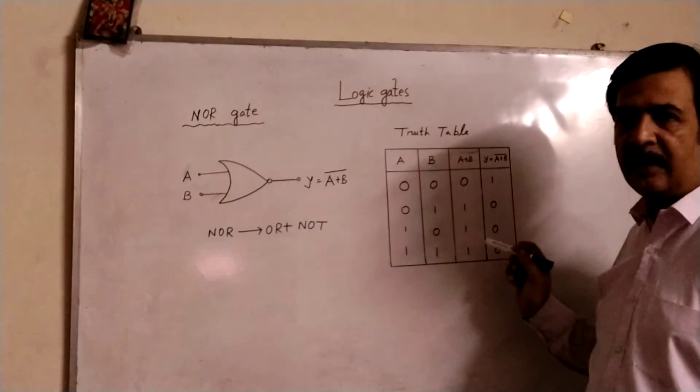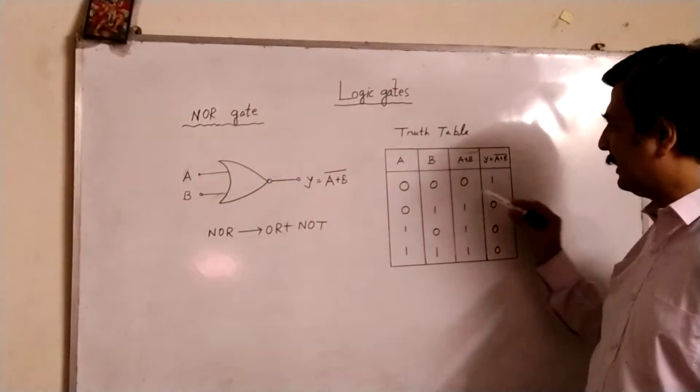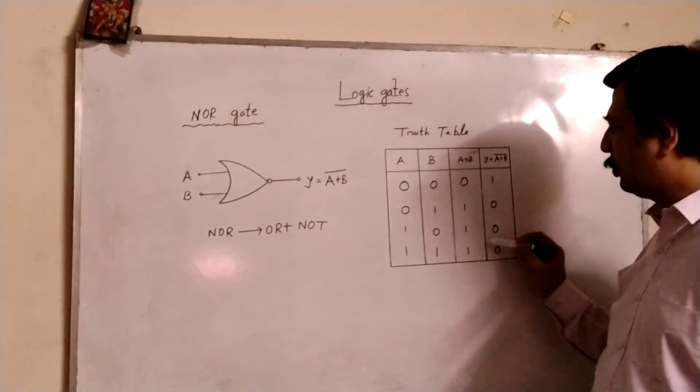And when it is inverted, it is 1, 0, 0, 0. That is 0 will be 1, 1 will be 0, so on.